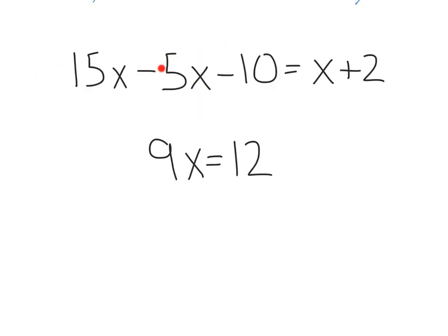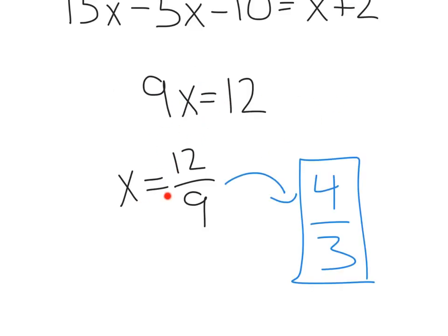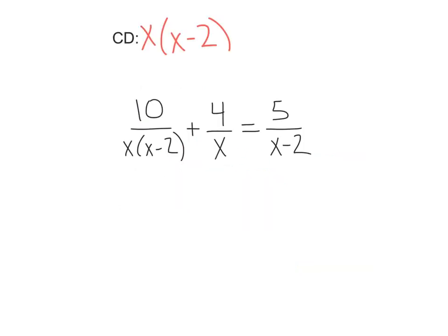And now we've just got to solve. 15x minus 5x is 10x minus the x over here leaves us with 9x. Add the 10 to the right equals 12. Divided out, we get x equals 12 ninths, which simplifies to 4 thirds. Let's try another.